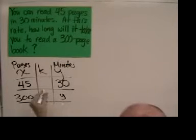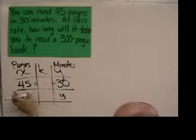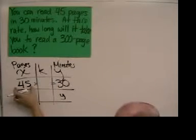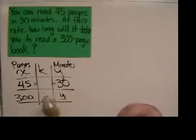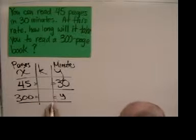So first thing we need to do is find K. And K is that magic value that you multiply 45 by to get 30. Then we're going to multiply that same K by 300 to get our answer.